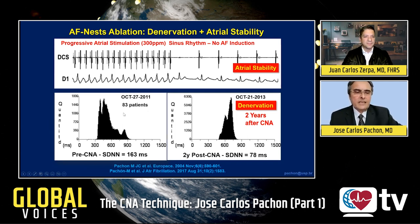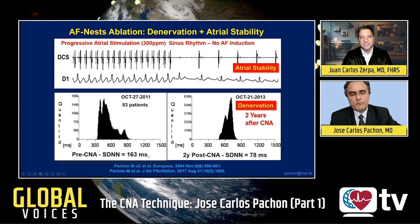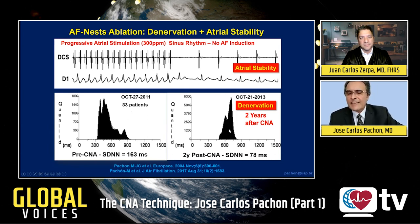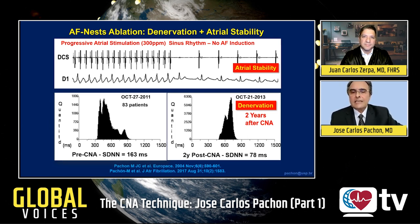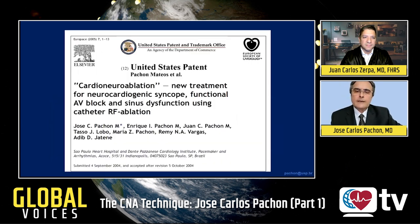Here we can see 83 patients studied before ablation of the AF nest. The mean SDNN was 163 milliseconds, and after two years following ablation of the atrial fibrillation nest, SDNN went down to 78 milliseconds. So we found that ablation of the AF nest caused important denervation.